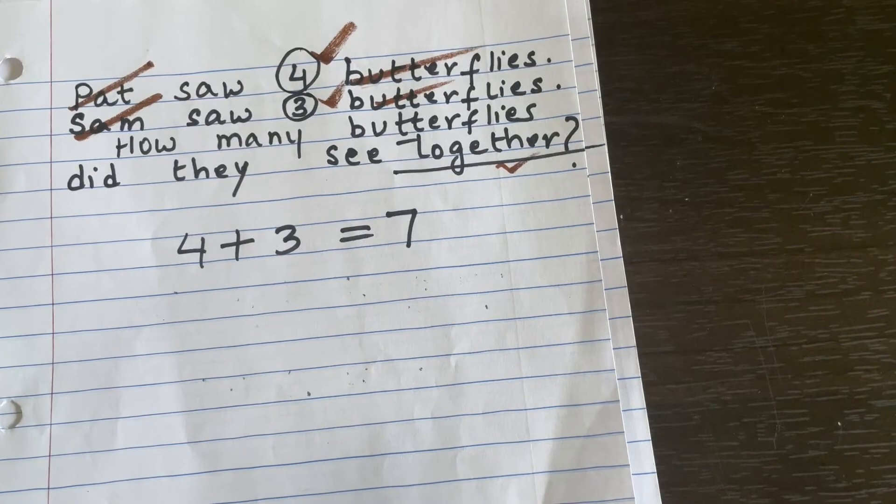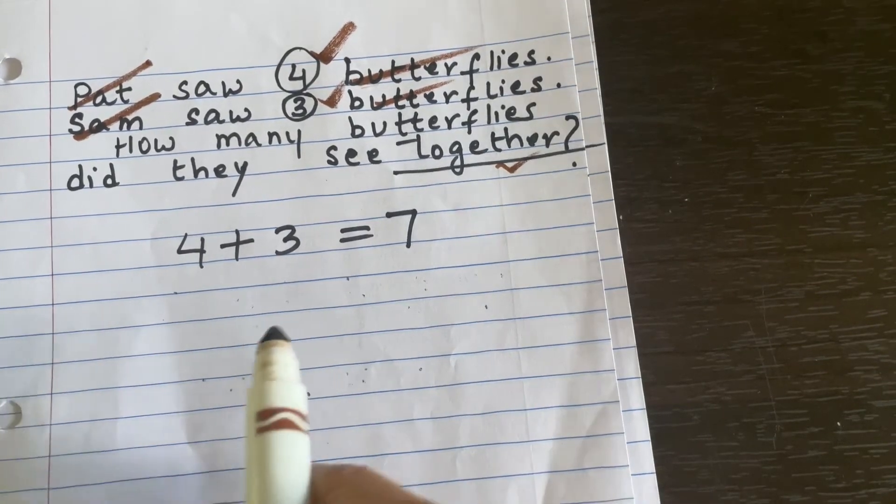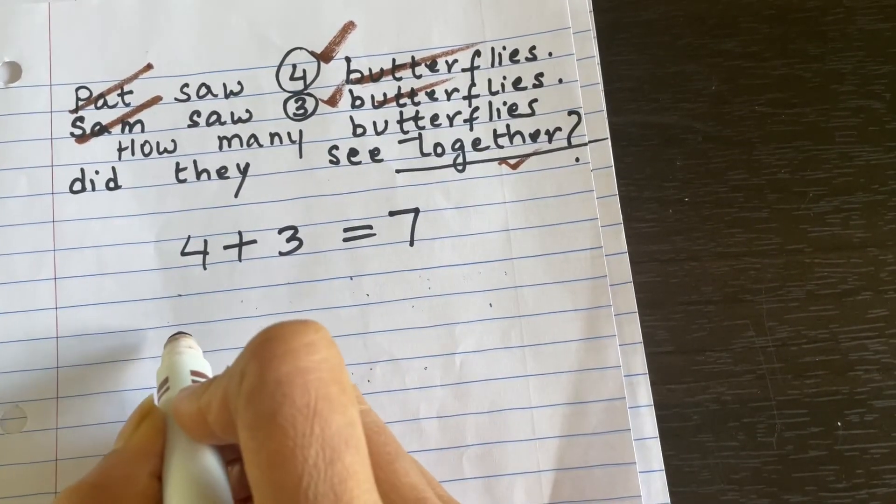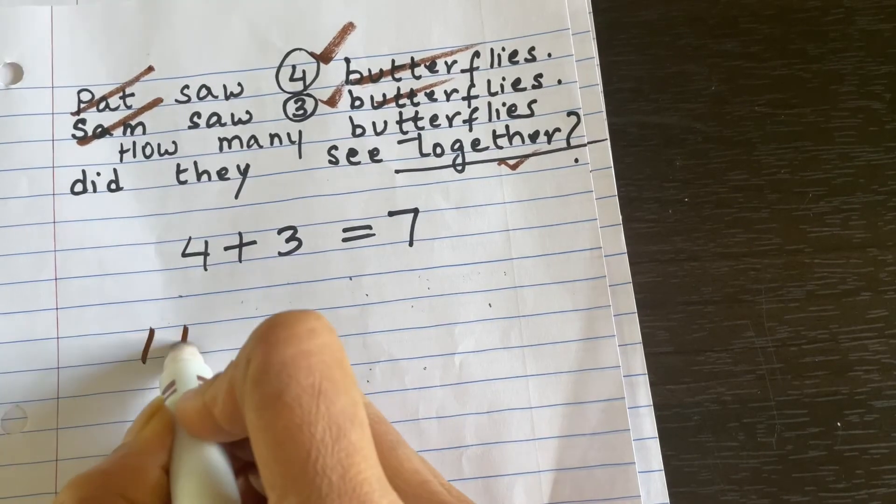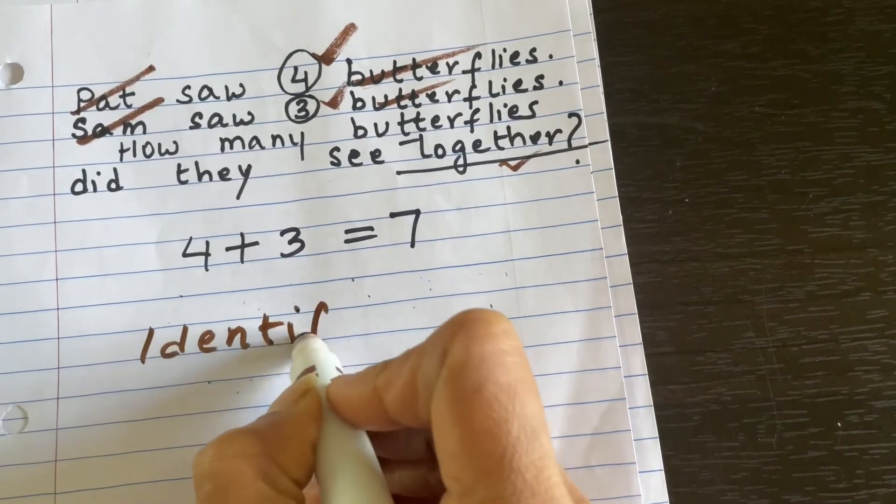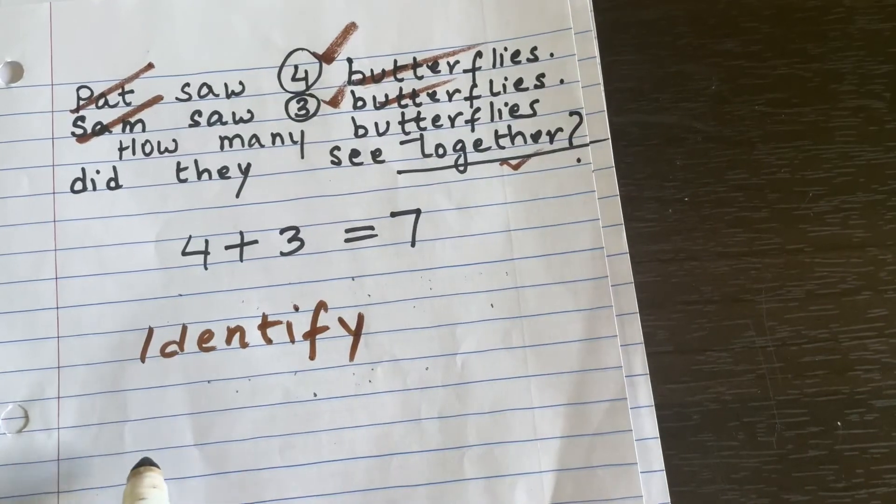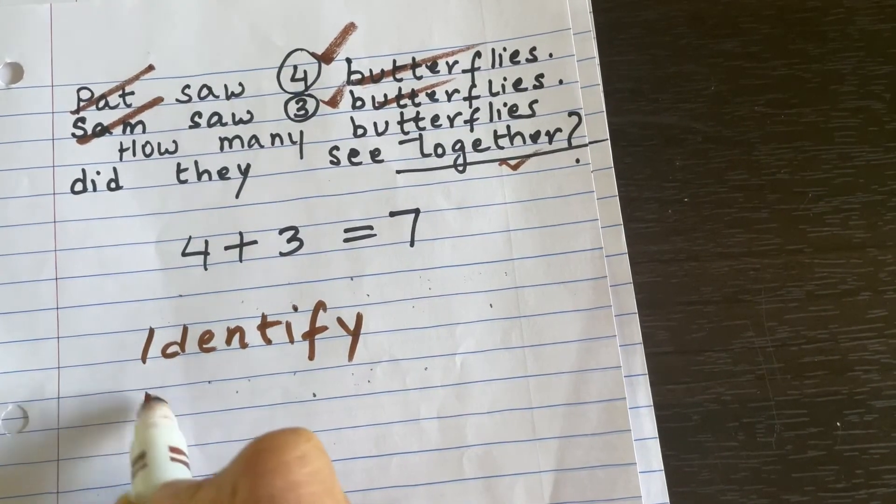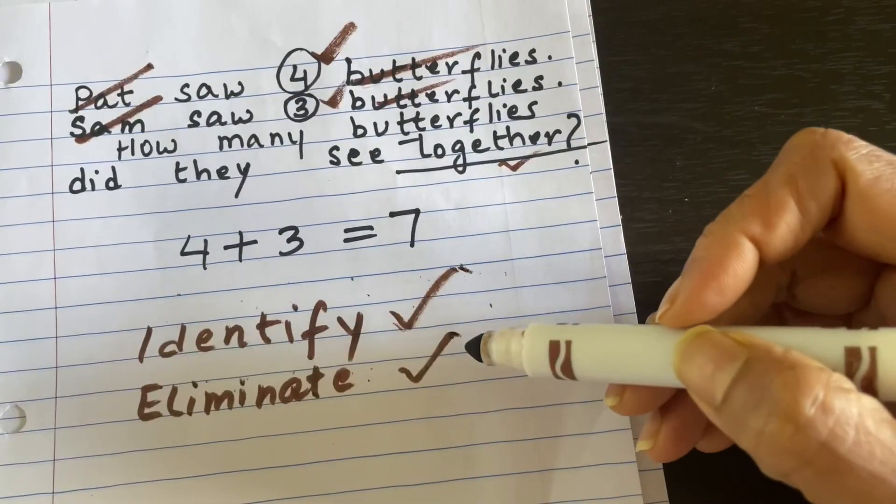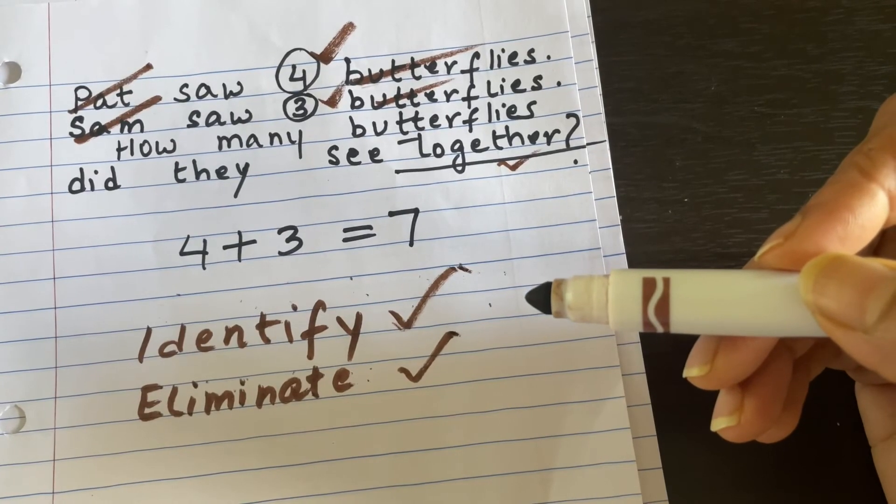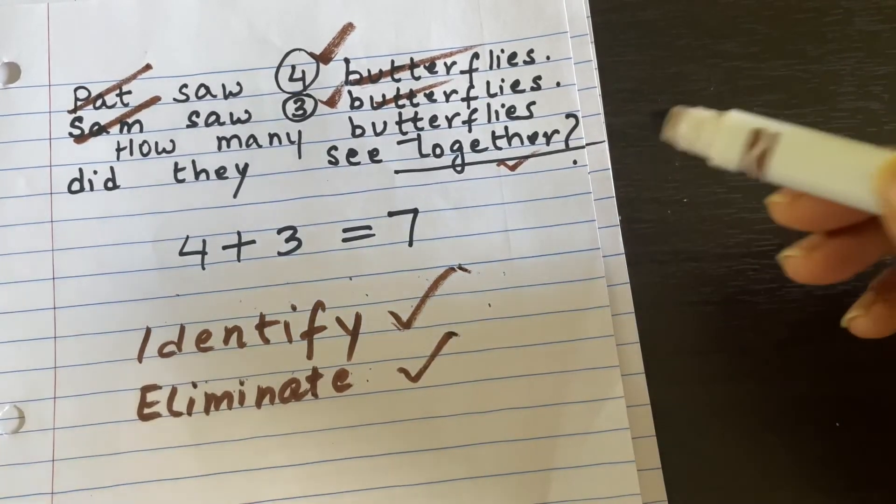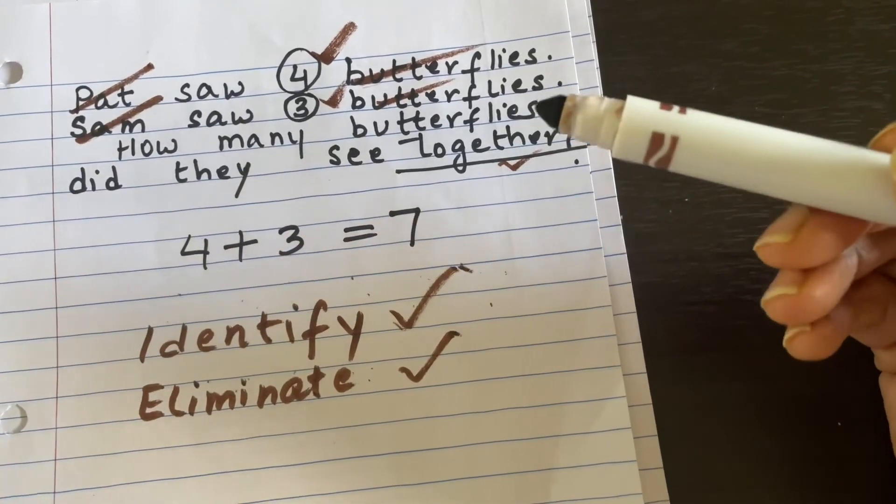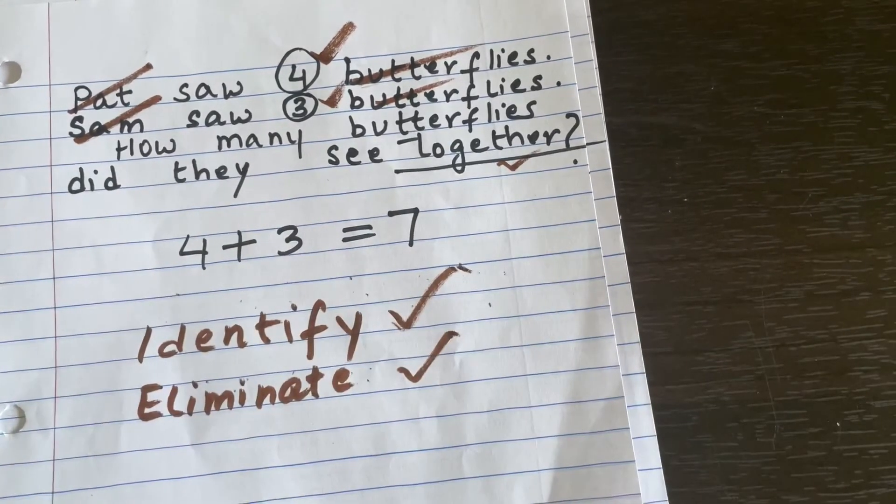So now what we understand from here: in word problems we have to identify and we have to eliminate. These are the two simple processes that we are going to see whenever we get a word problem, as it simplifies our word problem and makes it more easy and meaningful.